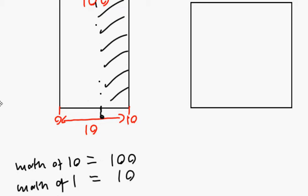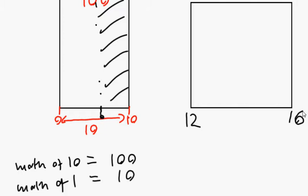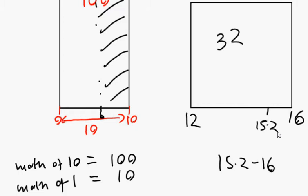Another example: this time the width is four, from zero to four — same as twelve to sixteen, which is still a width of four. The question will randomly give you a number. A width of four represents 32 people. What I want to find out is how many people are in between fifteen point two to sixteen.